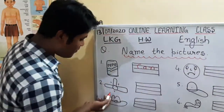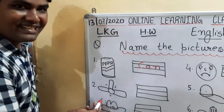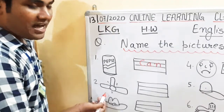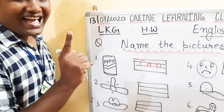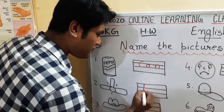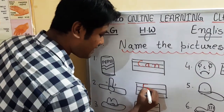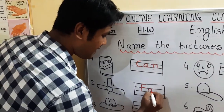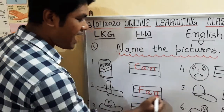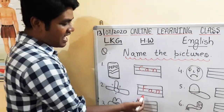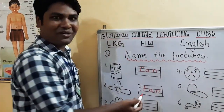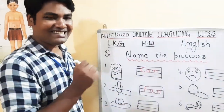Next, what is this? Check the figure. Fan. Write down F-A-N, fan. F-A-N, fan. N sound words. F-A-N, fan.